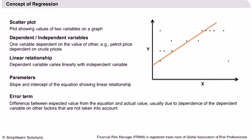As you can see, not all points lie on the line, so there is an error in this kind of linear approximation, and it is this error that we need to minimize. The error exists because the relationship is not exactly linear and there might be other variables affecting the value of the dependent variable. For example, petrol prices do change with increase in crude oil prices.